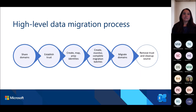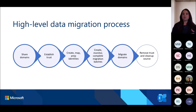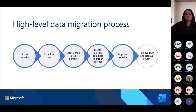At a high level, the typical cross-tenant data migration process with our available products could look like this. First, you could use domain sharing for email to share a domain that will be moving with your users or a new domain assigned to migrating users. After that, you'd establish a trust relationship for content migration — for mailbox migration, that means creating the Azure app for authorizing mailbox migrations in the target tenant, creating an org relationship object on both sides, and creating a migration endpoint in the target tenant. Next, you'd create new identities in your target tenant and map them to source tenant users.